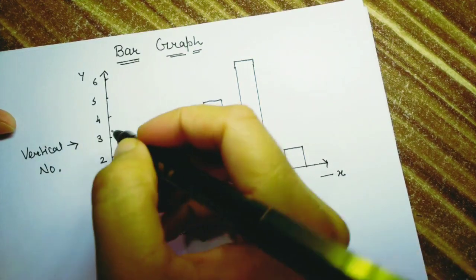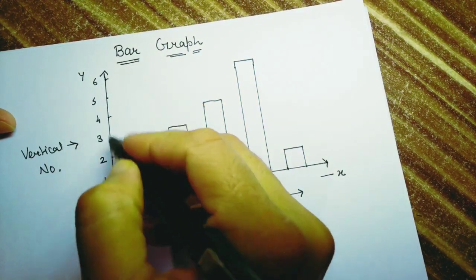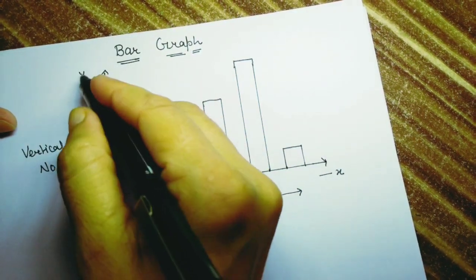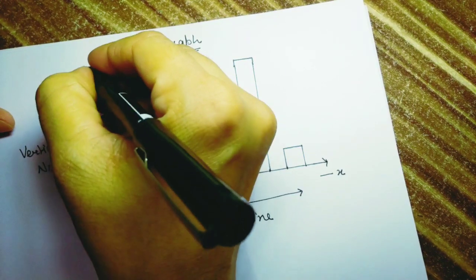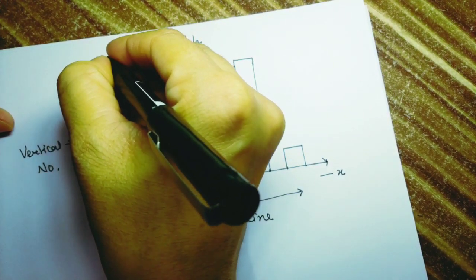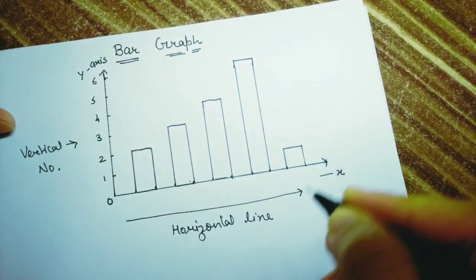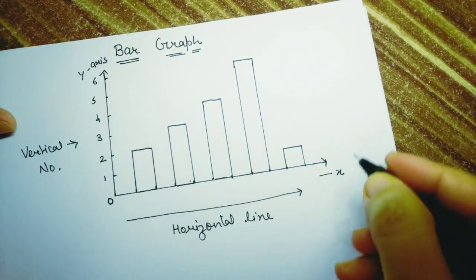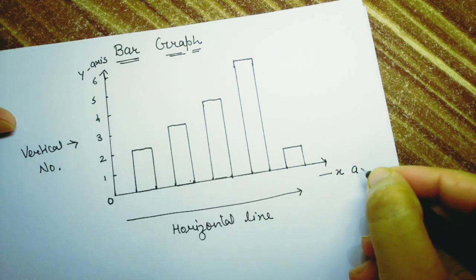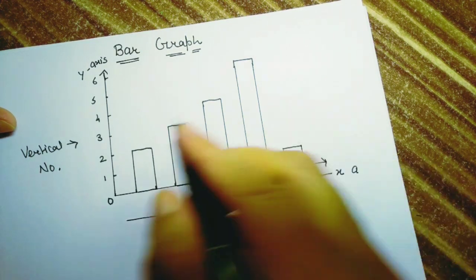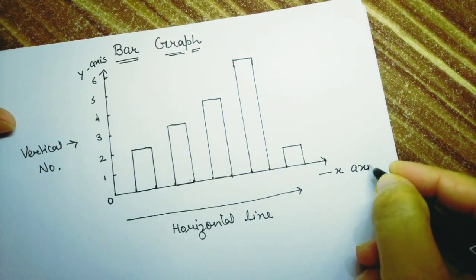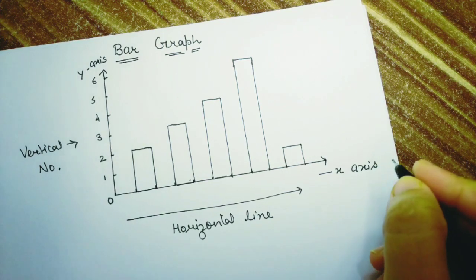The vertical line which provides the number is called the Y-axis, and the horizontal line is called the X-axis.